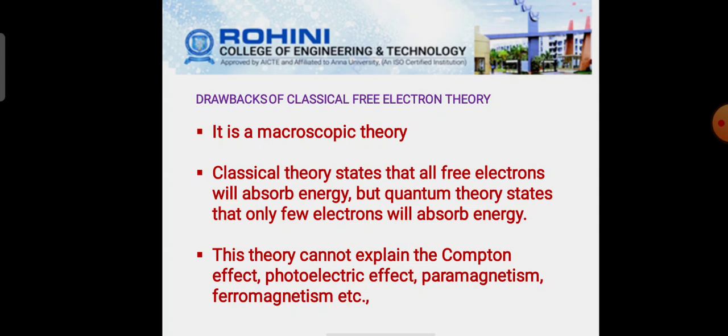Next, the demerits or drawbacks of classical free electron theory. It is a macroscopic theory. Also, this states that all free electrons will absorb energy, but quantum theory states that only few electrons will absorb energy. This theory cannot explain the Compton effect, photoelectric effect, paramagnetism, ferromagnetism, etc.